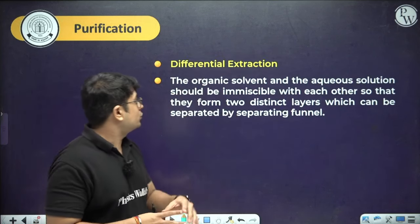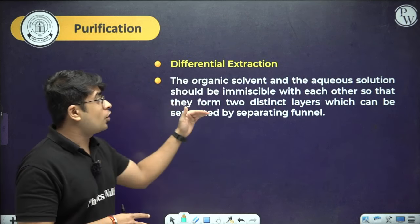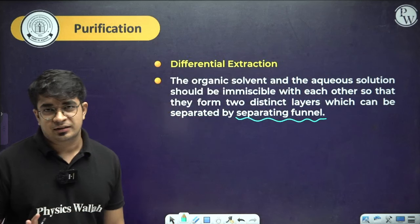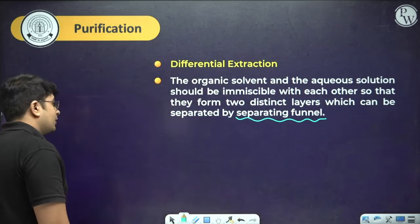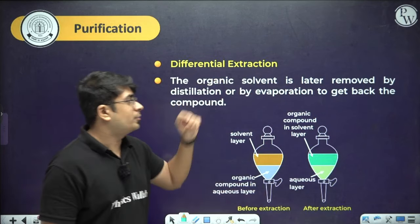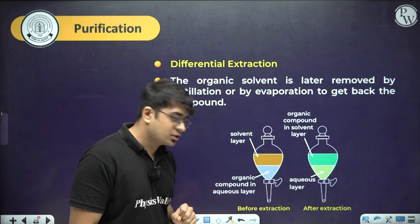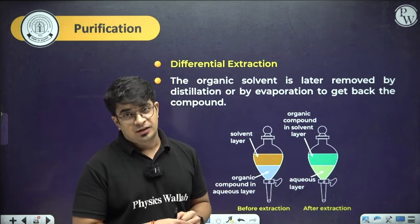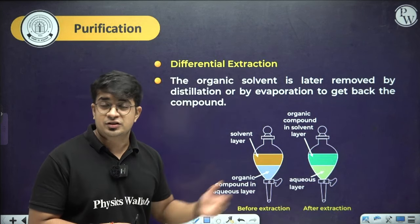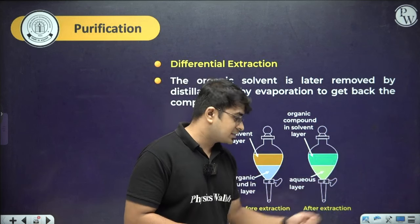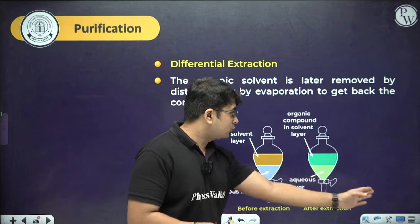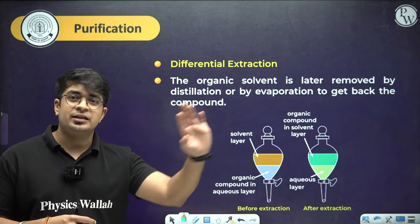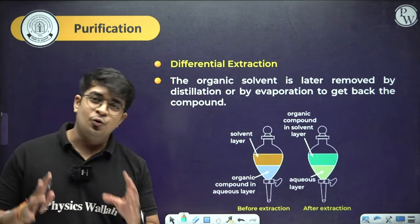The organic solvent and the aqueous solution must be immiscible to form two distinct layers separated by a separating funnel. The organic solvent is later removed by distillation or evaporation to recover the organic compound. In the process, the organic compound transfers from the aqueous layer to the upper organic solvent layer, and after separating and evaporating the solvent, the pure organic compound is obtained.